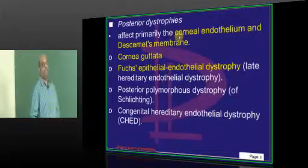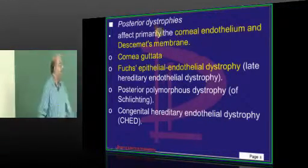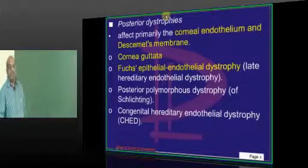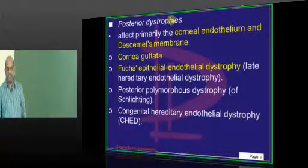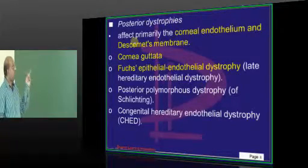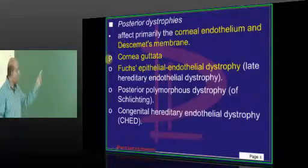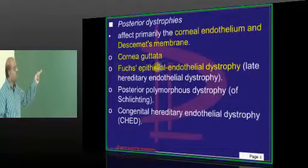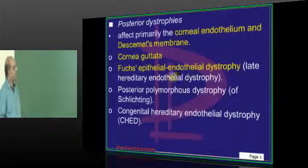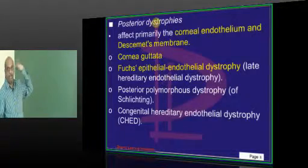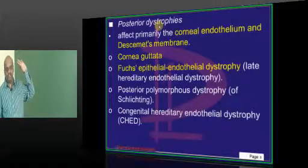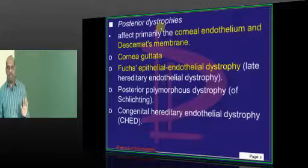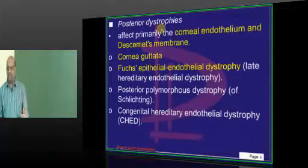For posterior dystrophies — if they involve the endothelium and Descemet's membrane, you call them posterior dystrophies. You have to remember two names: cornea guttata and Fuchs epithelial endothelial dystrophy. These two are within MBBS syllabus.